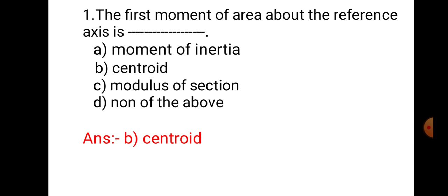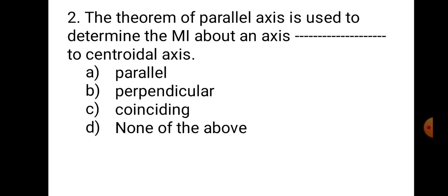Question number 2. The theorem of parallel axis is used to determine the MI about an axis parallel to the centroidal axis. A. Parallel, B. Perpendicular, C. Coinciding, and D. None of the above. This is the most important theorem in moment of inertia, known as the parallel axis theorem. From the name itself, it is clear that this theorem is used to determine MI about an axis parallel to the centroidal axis. Therefore, the correct answer is A. Parallel.